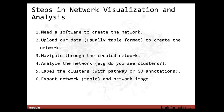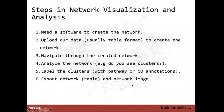These annotation tools perform statistical tests to provide a list of terms describing the whole network or part of it. In summary, the steps for network visualization and analysis are: create the protein-protein interaction network, upload your experimental data in table format, navigate through the network to understand node and edge relationships, perform clustering analysis to identify modules of interest, annotate those modules with pathway or GO annotations, and export as an image for publication.